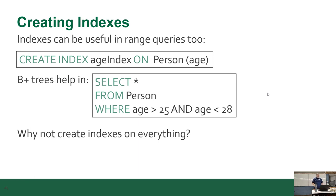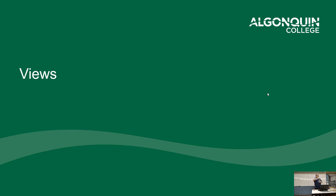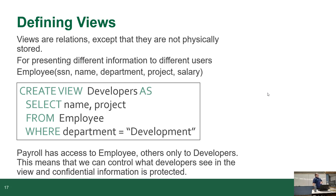Now we'll dive into views. Views are treated as relations — basically treated as a table but not physically stored. Views can be used for several things. You can use them to hide data from specific users: depending on who they are, the application uses a different view. The syntax for creating a view is: CREATE VIEW, give it a name, AS, and then any standard SQL SELECT statement — it can be big, small, complex, or simple.